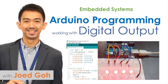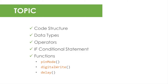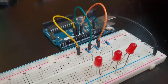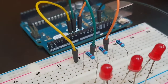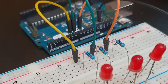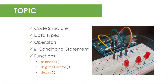Hi and welcome to Embedded Systems course Prototyping with Arduino Uno. In this video, we're going to learn basic Arduino programming, its code structure, data types, operators, and simple conditions. We'll apply these concepts and work with the Uno board's digital pins. We'll explore some useful functions such as pinMode, digitalWrite, and delay to control some output LEDs.